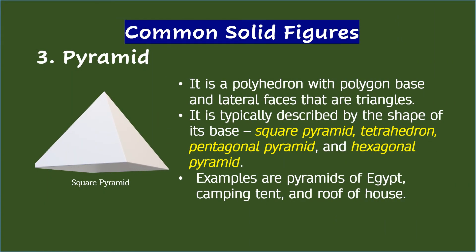3. Pyramid — it is a polyhedron with a polygon base and lateral faces that are triangles. A pyramid is typically described by the shape of its base, which can be a square pyramid, tetrahedron, pentagonal pyramid, and hexagonal pyramid. Common objects that look like a pyramid are the pyramids of Egypt, a camping tent, and the roof of a house.